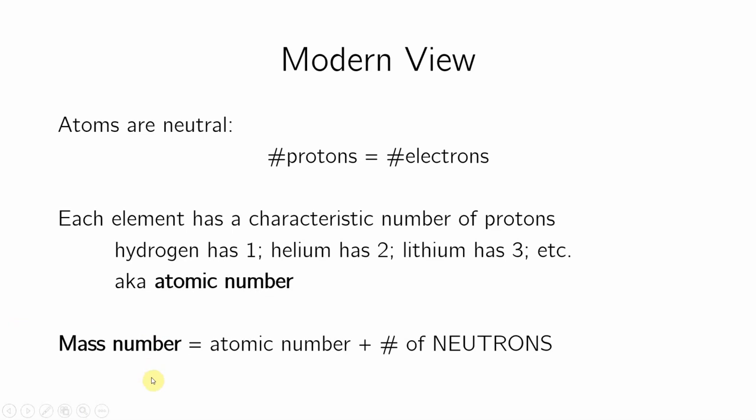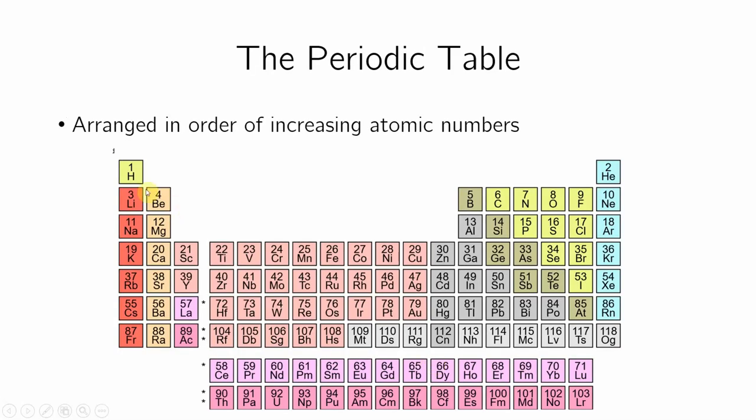The periodic table also reports this thing called a mass number, which is the number of protons plus number of neutrons. You add them both up together. And here is the periodic table. There's 1 proton for hydrogen, 2 protons for helium, 3 for lithium, 4 for beryllium.